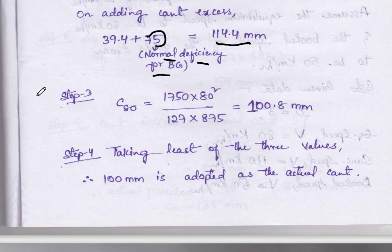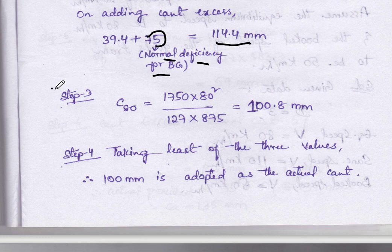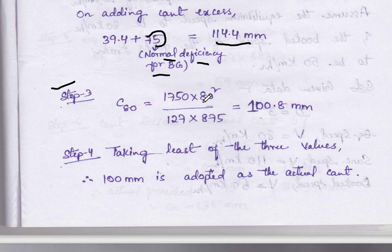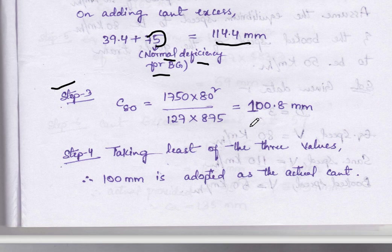Step 3: we have to calculate for C80, that is 80 km per hour. Superelevation equals 1750 into V squared, 80 by 127 into R 875. We get 100.8 mm.